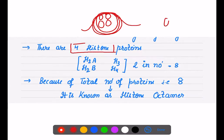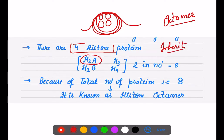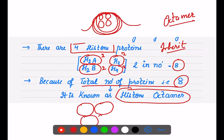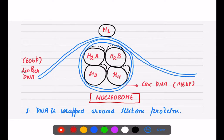This is how DNA starts wrapping around the histone proteins — that is how packaging of DNA is done. Now, how many histone proteins are there? Since we call it an octamer, there are four types of histone proteins: H2A, H2B, H3, and H4. Each occurs in pairs, so two plus two plus two plus two equals eight. Therefore, there are eight histone proteins in total, forming the histone octamer.